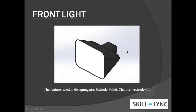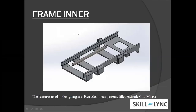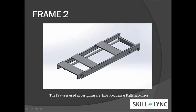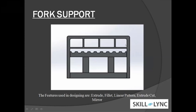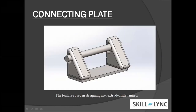Here are the front light and rear light. This is the first frame of the fork — the innermost frame through which the fork moves up and down; you can see the hydraulic cylinder setup here. This is the fork itself, which moves up and down within that frame, with a roller ball bearing arrangement. The fork support attaches to the frame, and the connecting plate connects the hydraulic cylinder to the base of the body.